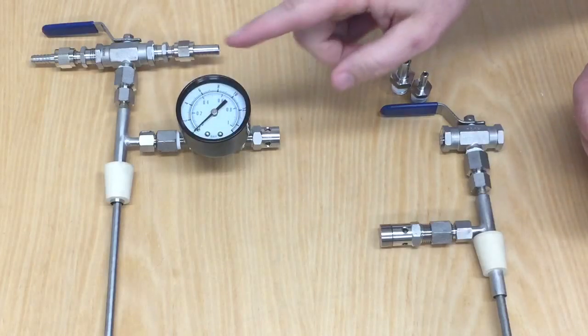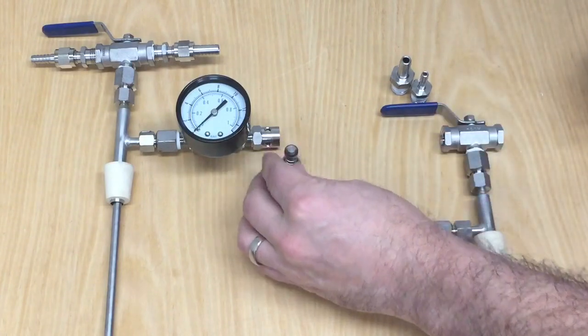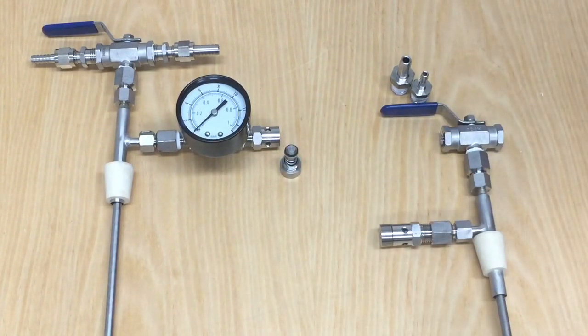If you have our deluxe counter pressure bottle filler, it'll tell you the pressure. Otherwise you can get your flow rate properly by twisting it during a fill to where you just have a little bit of foam coming off.